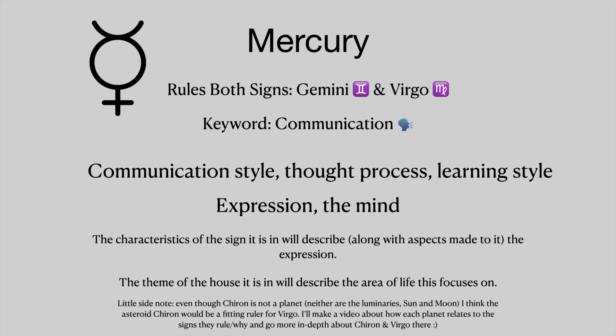A little side note: even though Chiron is not a planet — and neither are the luminaries, the sun and moon — I think the asteroid Chiron would be a fitting ruler for Virgo. I'll make a video about how each planet relates to the sign they rule and why, and I'll go more in depth about Chiron and Virgo there. Don't worry about it if you don't know what that means.